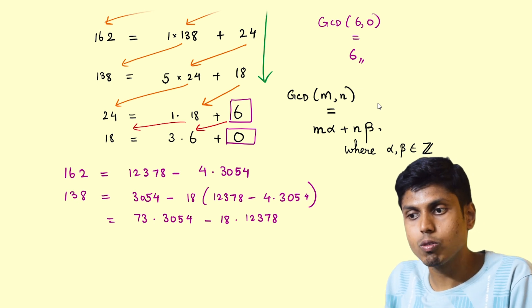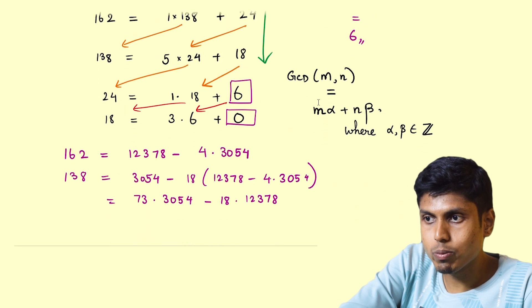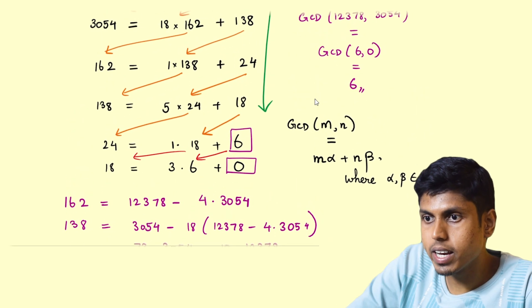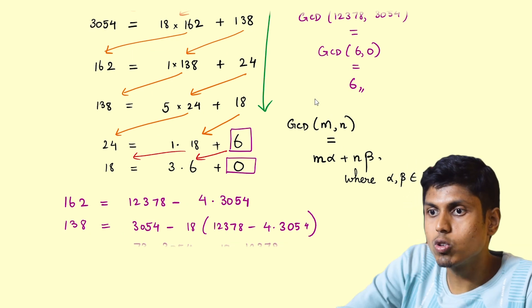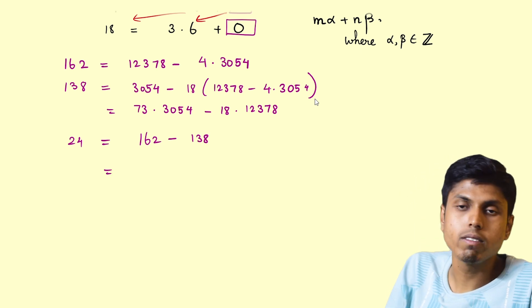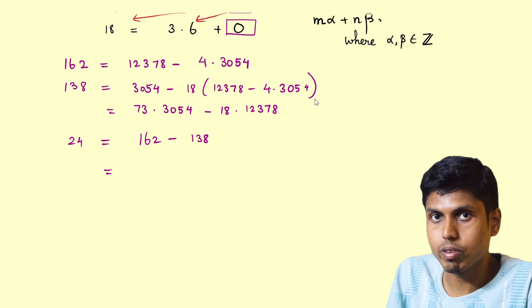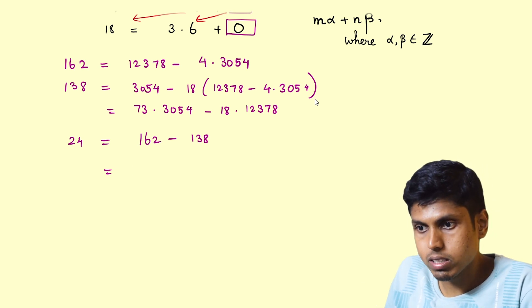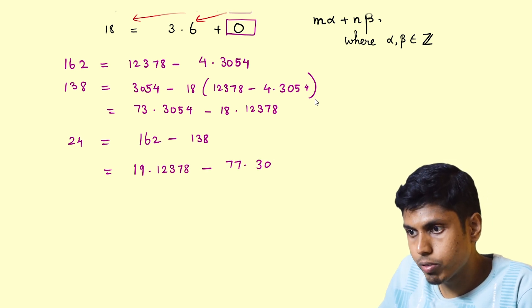By similar way, one could now represent 24. 24 is just obtained by shifting 138 to the left-hand side, so it is 162 minus 138. And we know the way in which we can represent 162 and 138 in terms of m and n each. So when you do that, you will get 24 equals 19 times 12378 minus 77 times 3054.